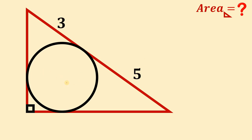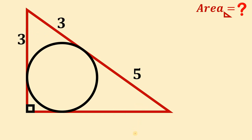To answer this question, we will use some laws of tangents. Take note: from the point of tangency and the point outside the circle, these two tangent lines are equal. So if this segment is 3, the other segment must also be equal to 3. Also, if this length is 5, then the other segment must also be equal to 5. So this is 3 and this segment is also 5.